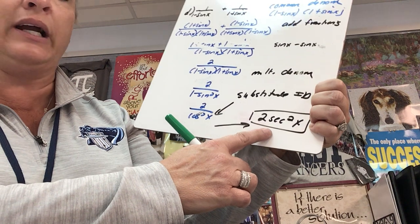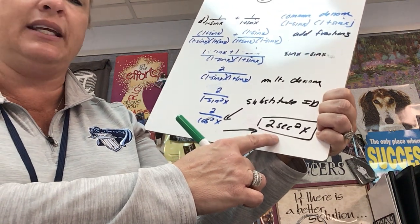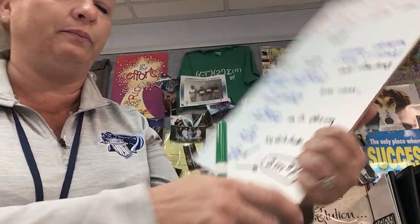I encourage you to print out your trig identities sheet, add the odd and even identities, and add the different versions of the Pythagorean identities. As you work, show your steps. As you saw with these four examples, all of them had a different approach. So try factoring, try common denominators, and try using your identities.